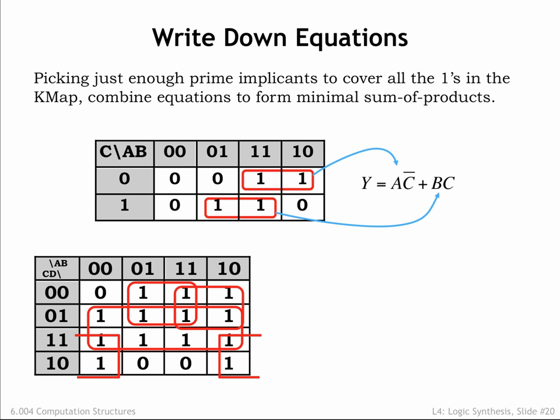Why is the resulting equation minimal? If there was some further reduction that could be applied to produce a yet smaller product term, that would mean there was a larger prime implicant that could have been circled in the K-map.